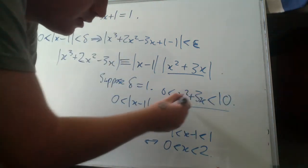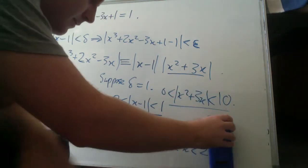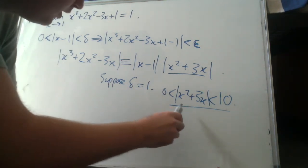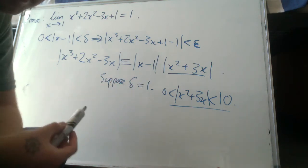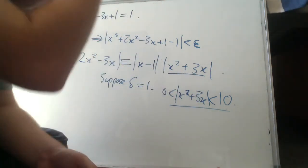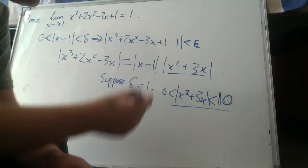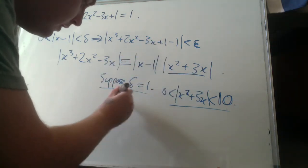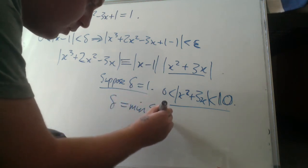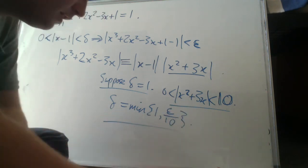And since this is always positive, it'll also hold for the absolute value. So it's always positive because of the constraint we placed on delta. Okay, cool. So now we've got our upper bound that we're going to replace this with for epsilon. So we know now that delta equals the minimum of 1 and epsilon over 10.